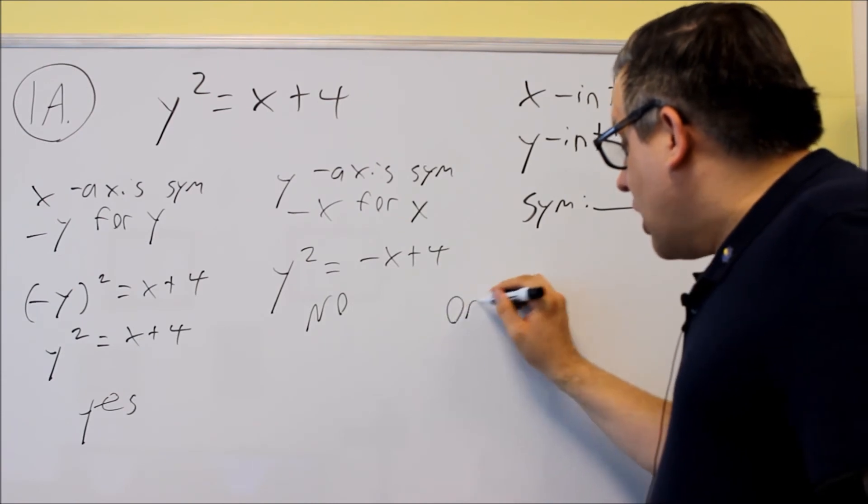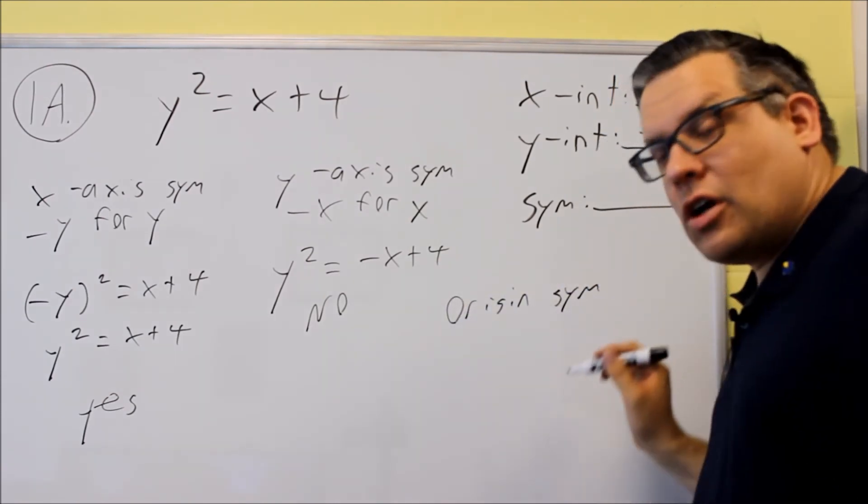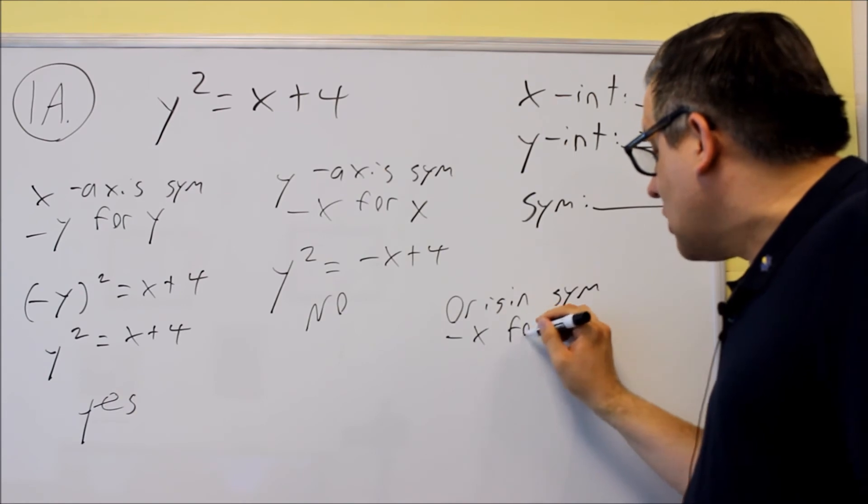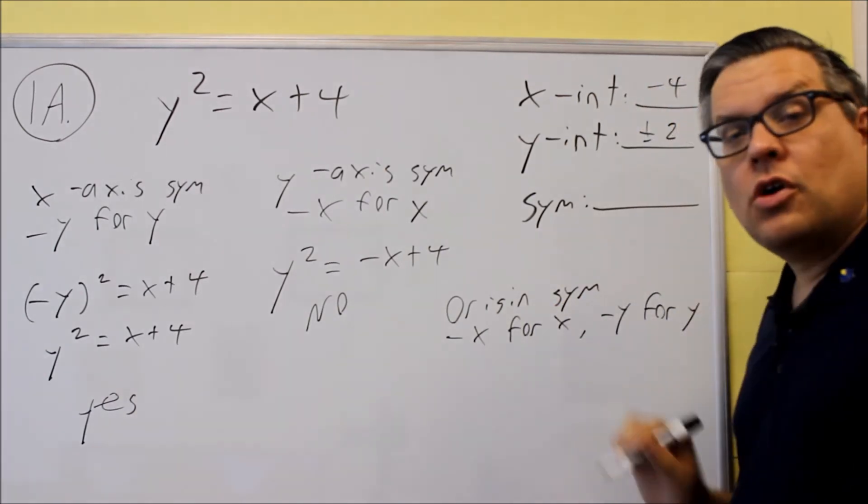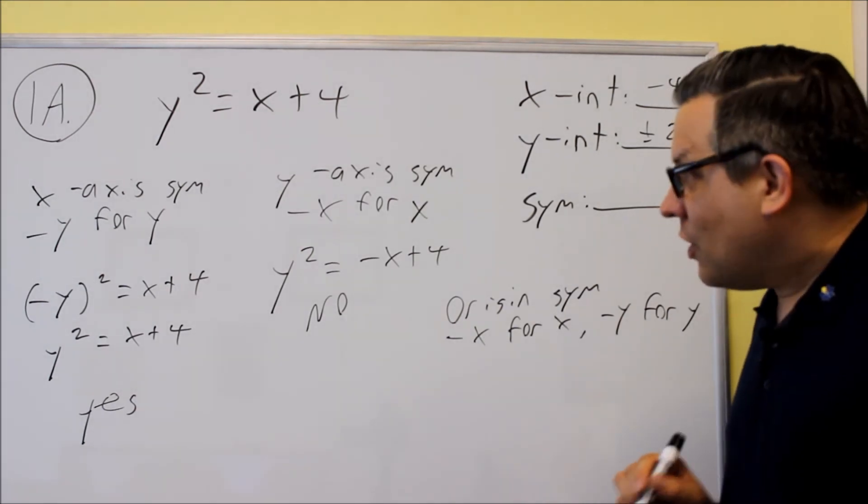The last one I'm going to check is origin symmetry I'll do over here. And this is negative x for x, negative y for y. We do both of them for the origin. Let's do that.